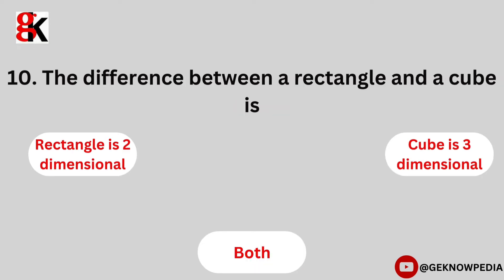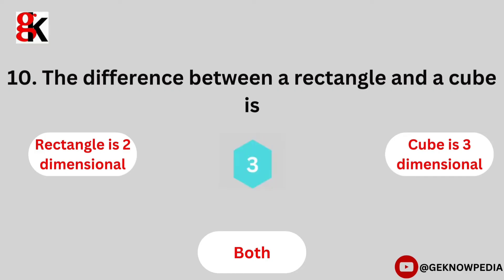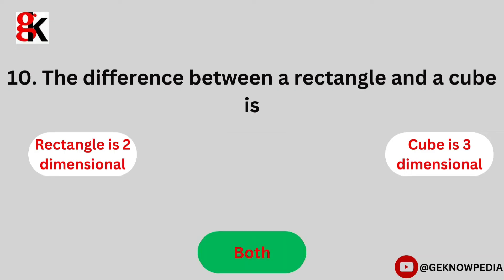Tenth question. The difference between a rectangle and a cube is: Rectangle is two-dimensional, cube is three-dimensional, both. The correct answer is both.